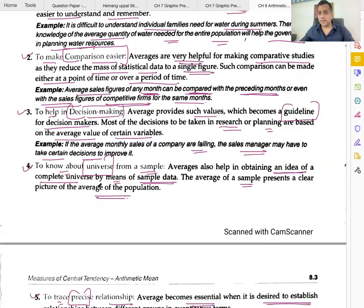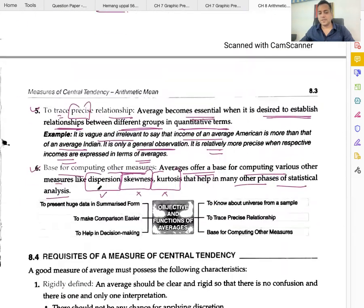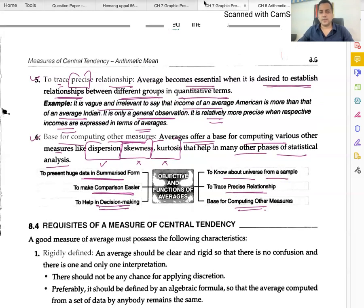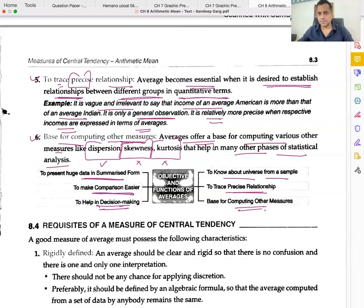So what are the objectives and functions? Number one: it helps in presenting huge data in a summarized form. We get to know about the universe from a sample. It makes comparison easier. It helps in tracing precise relationships. It helps in decision making. It acts as a base for computing other measures.